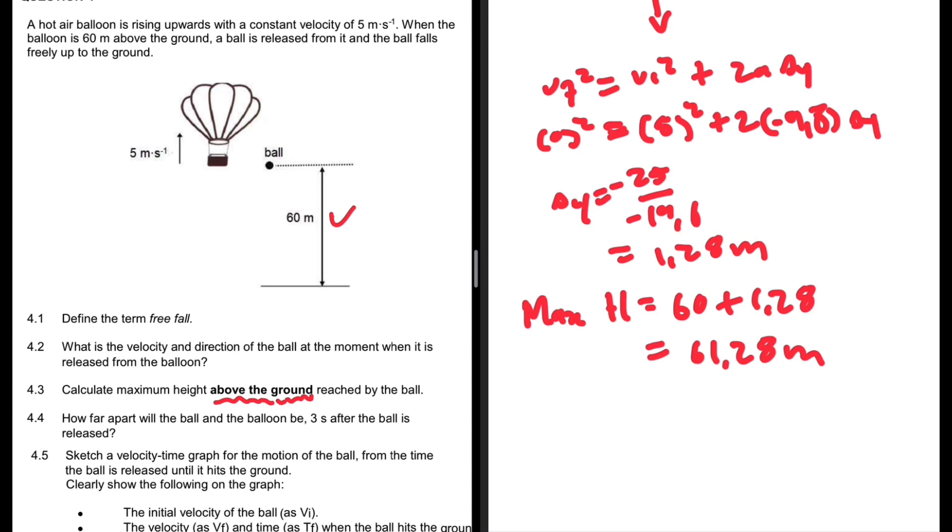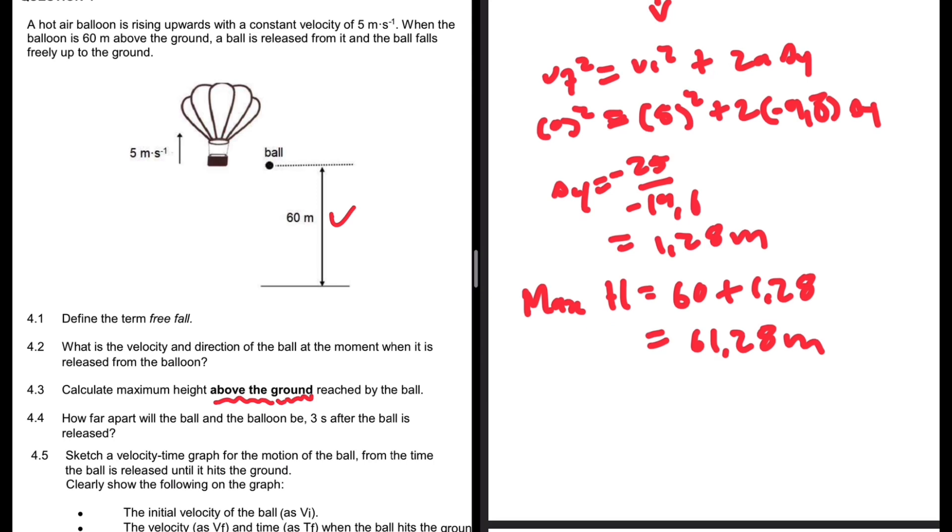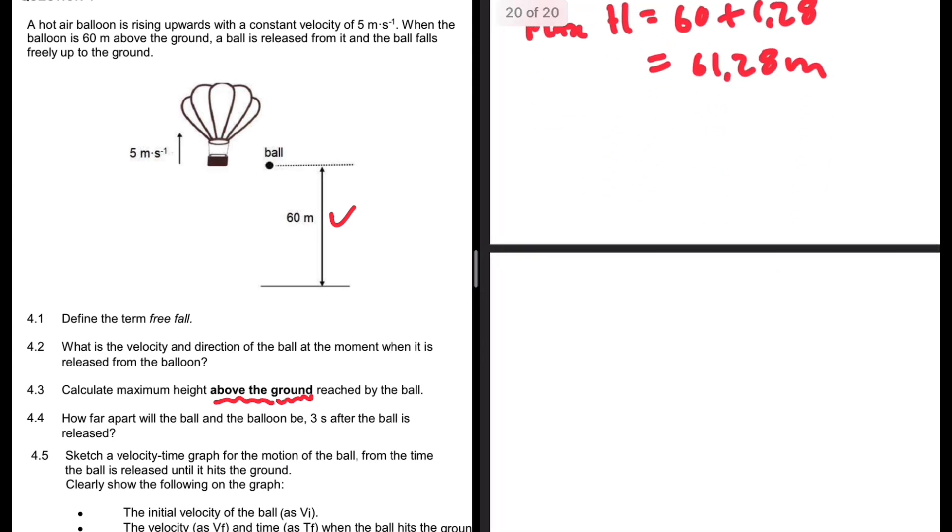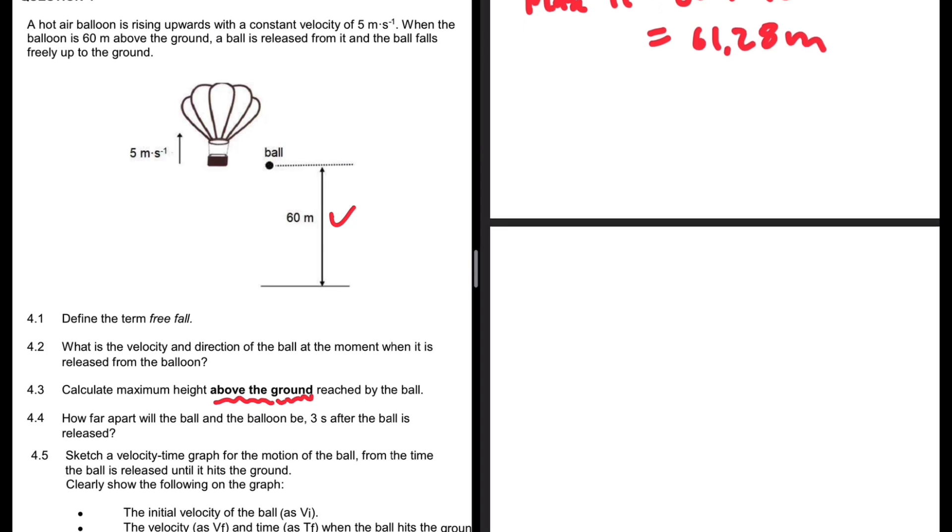How far apart will the ball and the balloon be 3 seconds after the ball is released? The balloon keeps rising at constant velocity and the ball starts by going up for some time and then starts going down. Let's start with the displacement of the balloon.